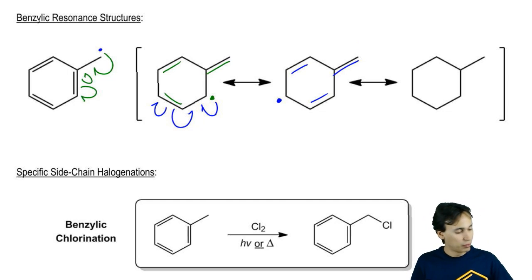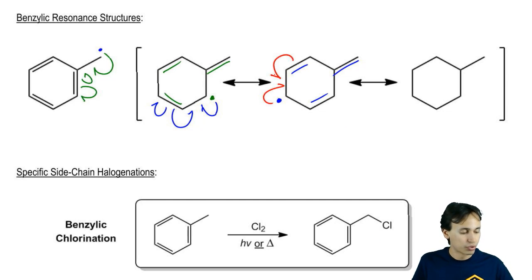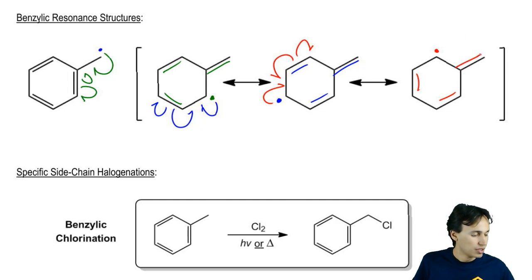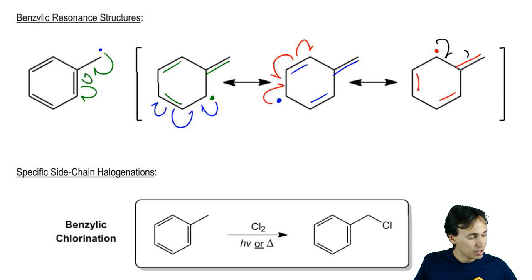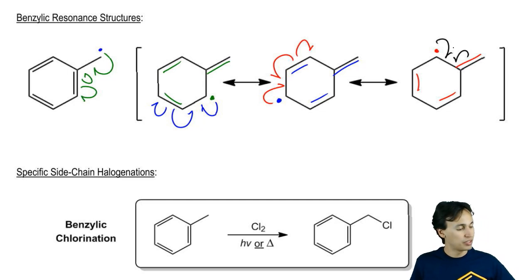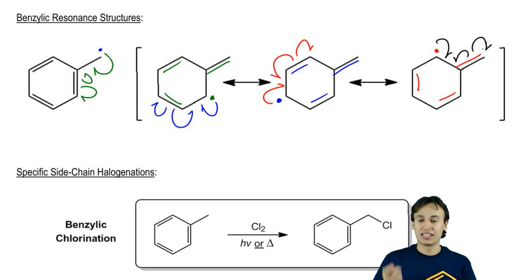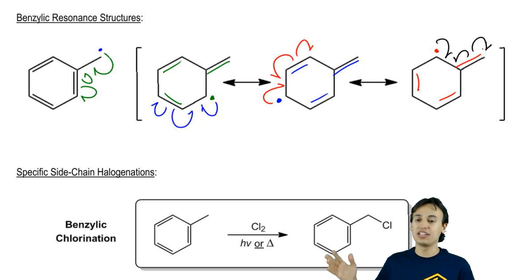And now I get a resonance structure that looks like this. But we're not done — we know this radical can keep moving along. So then we make a double bond, bring it over from that double bond, and dump the extra radical here. And finally, this ends the same way it began: this radical makes a double bond, this one comes to join it, and I get one extra radical left over. As you can see, this radical is like in heaven right now. It's the most stable radical ever because it's right next to a benzene — it can form all these resonance structures.